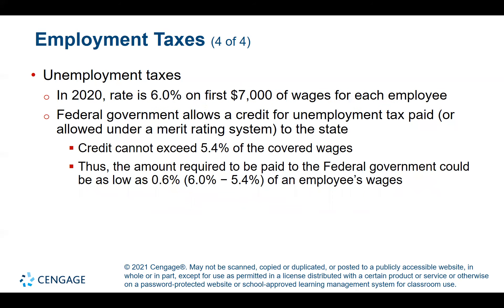Unemployment taxes are another employment tax. In 2020, the rate for federal unemployment tax was 6% of the first $7,000 of wages for each employee. As with FICA, this represents a regressive rate structure. The federal government allows a credit for unemployment tax paid to the state, and this credit cannot exceed 5.4% of covered wages, meaning the net amount required to be paid to the U.S. Treasury could be as low as 0.6% of an employee's wages.